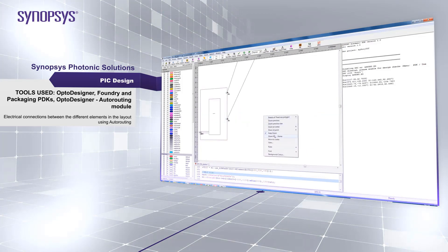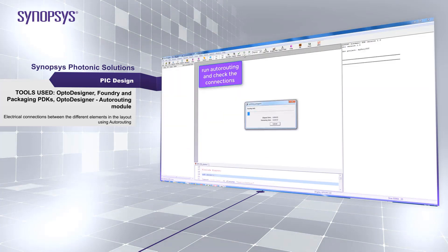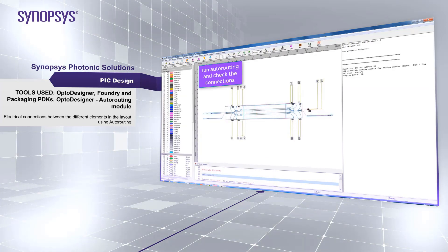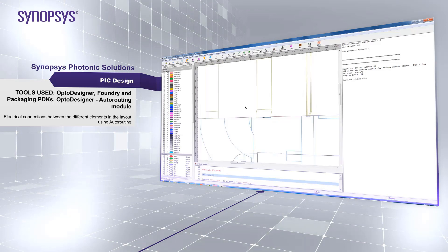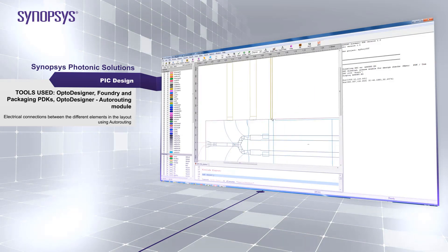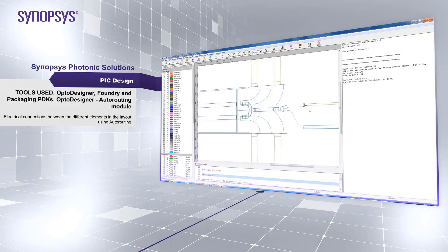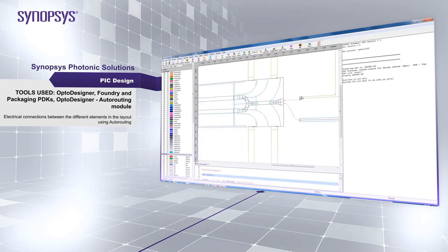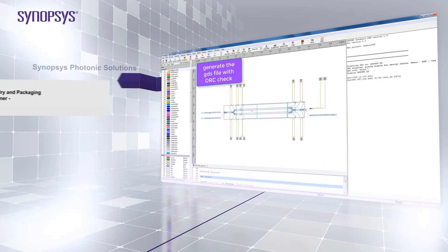It is possible to run design rule checking or DRC procedure once you complete the design. DRC is a very important step for any PIC designer. The DRC will verify your design against the design rules established by the foundry. Once the DRC report shows no errors, you can be sure your design can be sent to the foundry for fabrication.